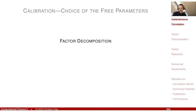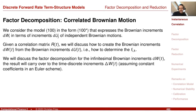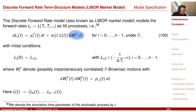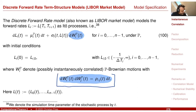First, factor decomposition. We consider our term structure model, equation 100. In that form, every forward rate had its own Brownian increment, and we specified an instantaneous, or infinitesimal, correlation — that was our correlation model.